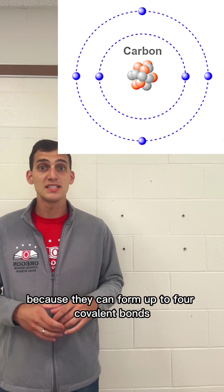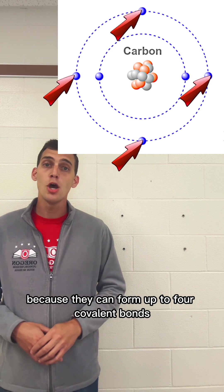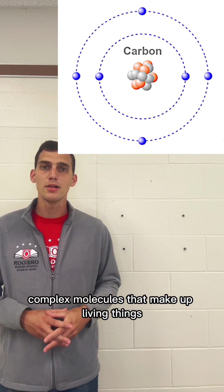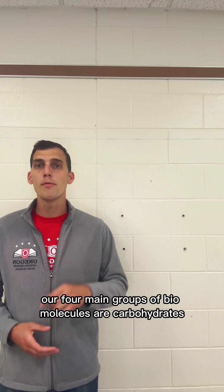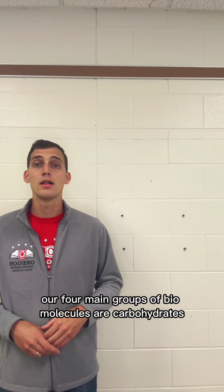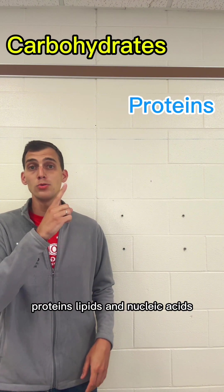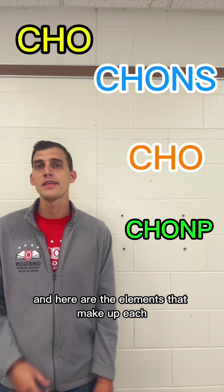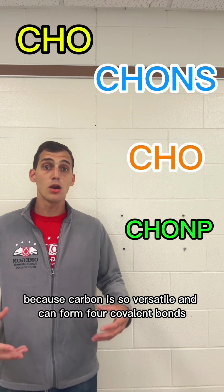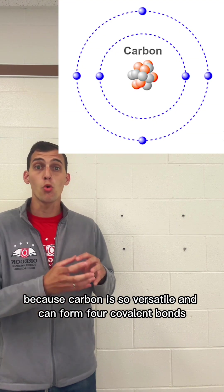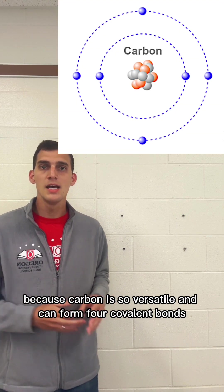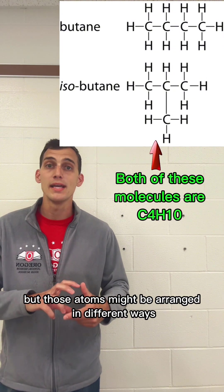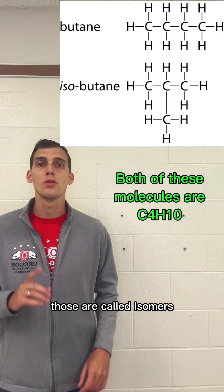Carbon atoms are special because they can form up to four covalent bonds, which makes them a really good building block for the large, complex molecules that make up living things. Our four main groups of biomolecules are carbohydrates, proteins, lipids, and nucleic acids. Because carbon is so versatile, some molecules might have the same atoms but arranged in different ways — those are called isomers.